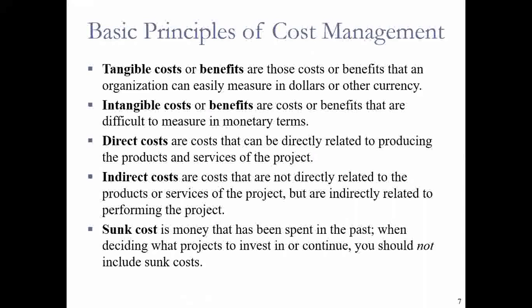What are the types of costs? We have tangible costs — these are costs or benefits that an organization can easily measure in dollars or currency. Then intangible costs are costs or benefits that are difficult to measure in monetary terms. Direct costs are the costs that can be directly related to producing the product or service — all activities that contribute to the production of a particular service or product are called direct costs. The opposite is indirect costs, which are not directly related to the production of a particular service or product.